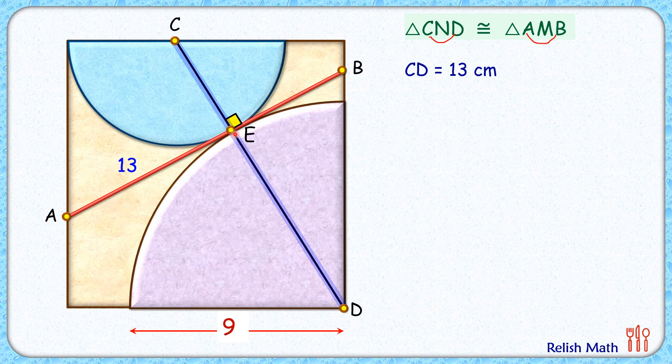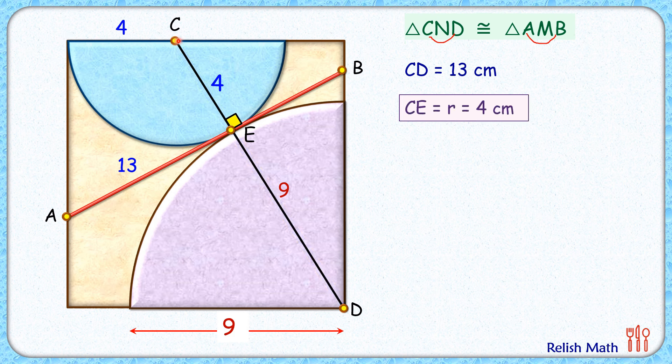As CD is 13, now if we'll have a look at the length ED, ED is nothing but the radius of this quadrant, so ED is 9 centimeters. Now the full length is 13, so remaining length CE will be 4 centimeters, or we can say that the radius of this semicircle is 4 centimeters.